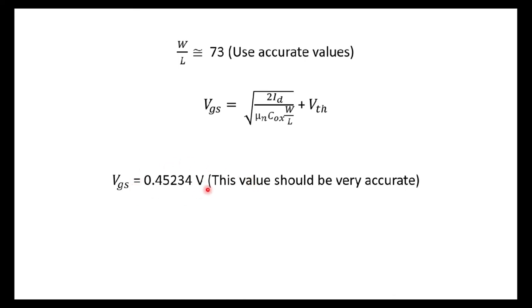So this value also should be very, very accurate. Even with two decimal places you are not going to get accurate value, accurate gain. You have to have at least four to five decimal places. So with this value, let's see in LTSpice if we are going to get 250 gain.